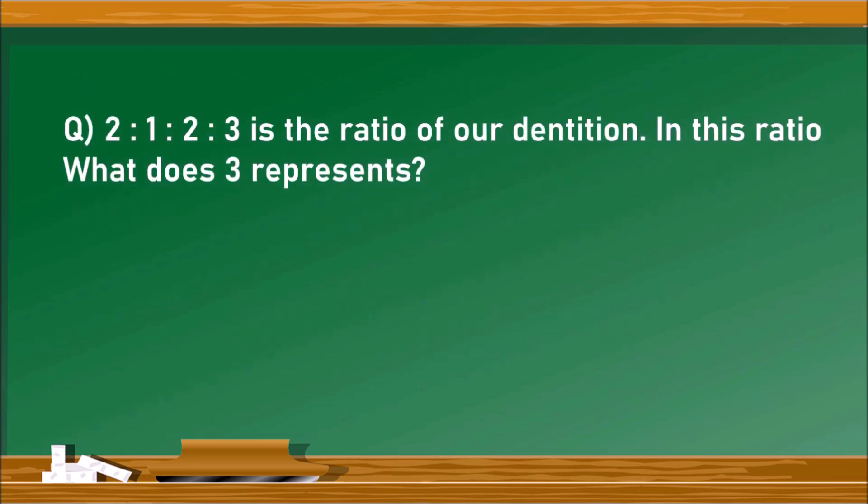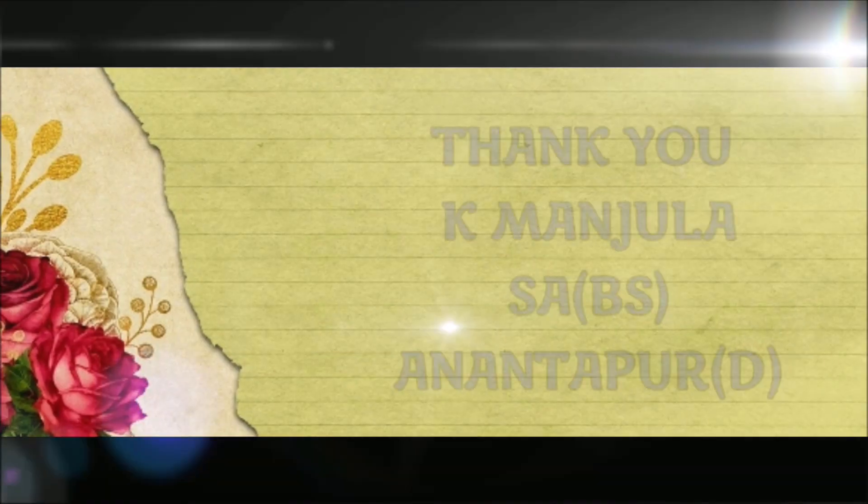Next question. 2 is to 1 is to 2 is to 3 is the ratio of our dentition. In this ratio, what does 3 represent? Here the 3 represents molars. The first 2 represents incisors, 1 is canine, and 2 is again premolars, 3 is molars.